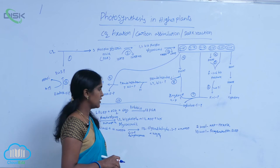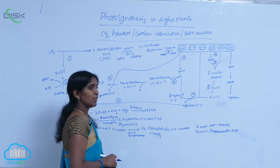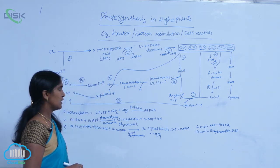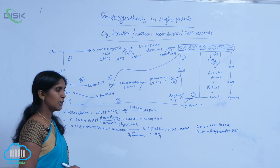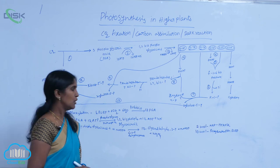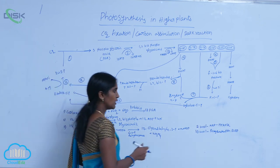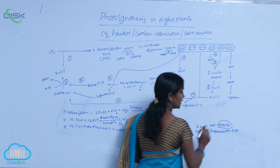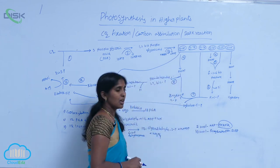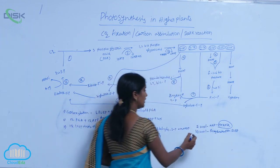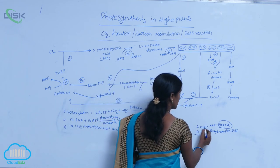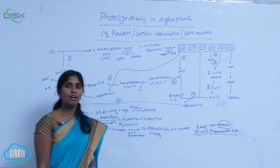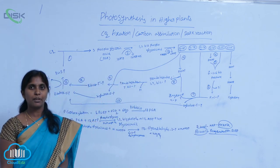That's why out of 12 molecules of glyceraldehyde-3-phosphate, 2 are utilized for the production of stable hexose and remaining 10 molecules are used for the regeneration of RuBP.